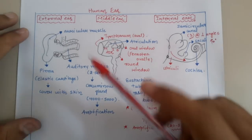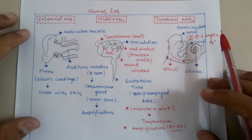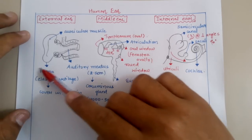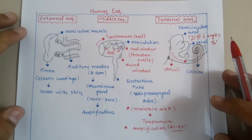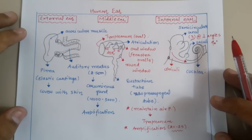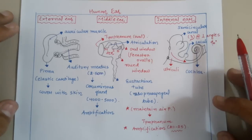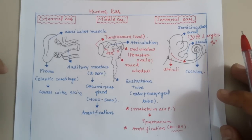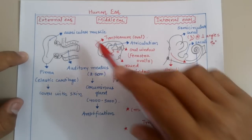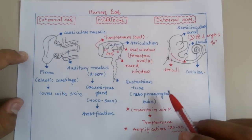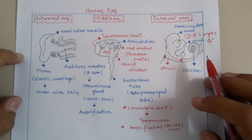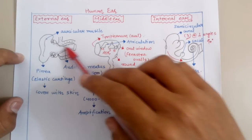The external ear is formed up of two parts: the ear pinna, which we can see in all human beings, and is also a characteristic feature of mammals — along with external body hair and mammary glands. The ear pinna is formed up of auricular muscle, that is an elastic cartilage, and it is covered with a fold of skin.